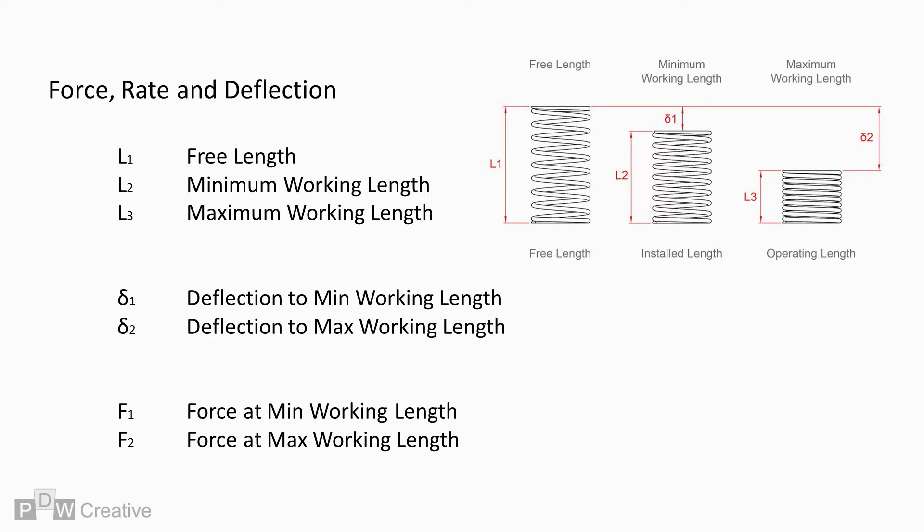So the three lengths we are interested in are the free length, minimum length, and max length. We are going to avoid the solid length at this stage. The free length is included just for reference to indicate zero deflection. Forces are transmitted linearly between the minimum and maximum working lengths.